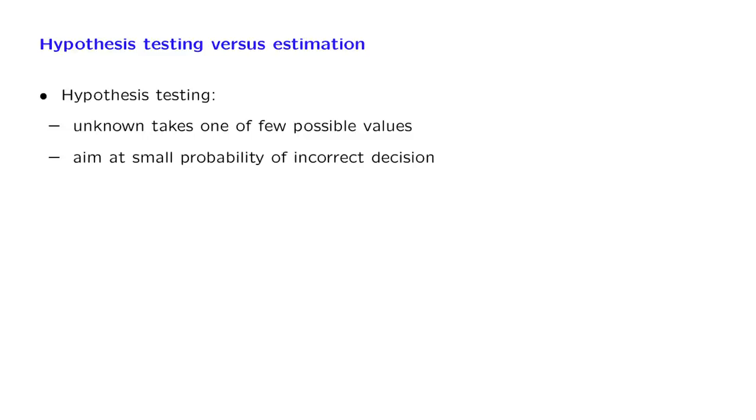There is another distinction between problem types which turns out to be a little more substantial. There are problems that we call hypothesis testing problems. In those problems, the unknown takes one out of a few possible values. That is, we may have a few different alternative models of the world, and we're trying to figure out which one is correct.